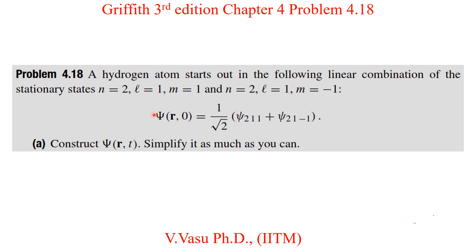The linear combination is capital Ψ of r at t=0, equal to 1 over square root of 2 times [ψ₂₁₁ plus ψ₂₁₋₁]. The first part of the problem asks us to construct Ψ(r,t) and simplify as much as possible.